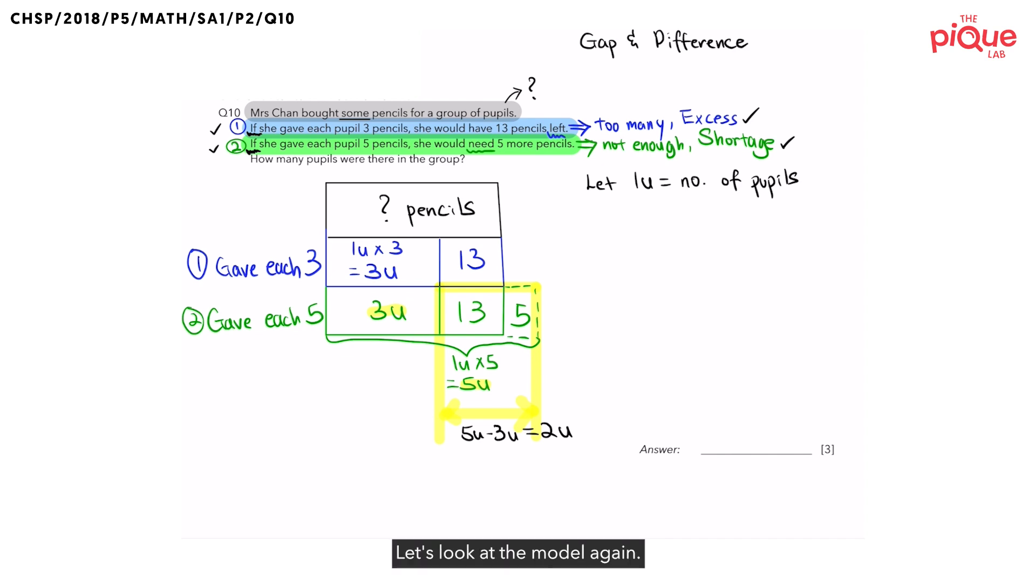What is this two units? Let's look at the model again. The act of Mrs. Chan giving three pencils in case one and five pencils in case two to each pupil gives us a difference of two pencils per pupil. With all the differences added up, a gap of two units is produced and this gap of two units is shown on the model as 13 plus 5 which gives us 18.